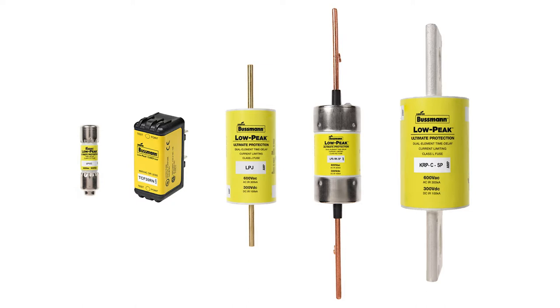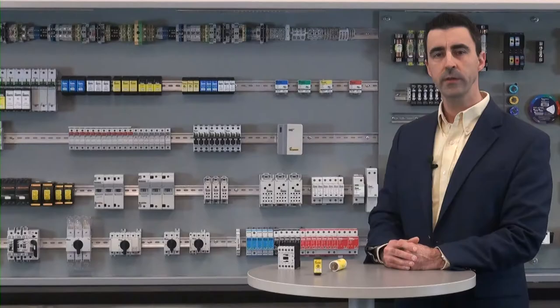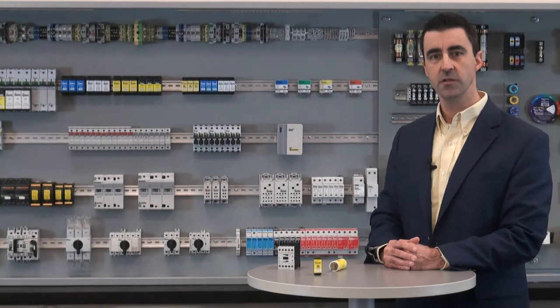Providing and specifying equipment with short circuit current ratings equal to or greater than the available fault current will not only comply with the National Electrical Code, but will help provide a safer, more reliable electrical installation. Current limiting fuses can help achieve these higher ratings due to their current limiting characteristics.